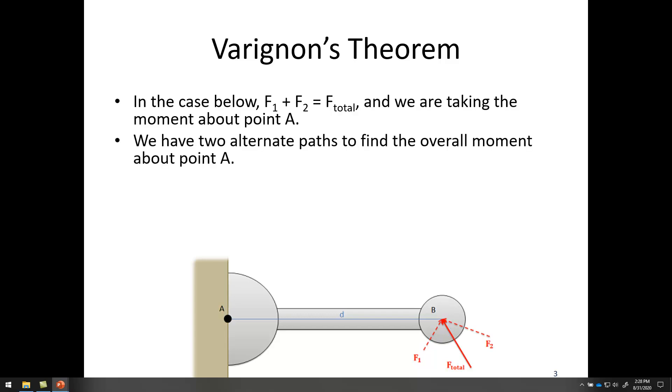So we have two alternate paths to find the overall moment about point A. Path number one, if I add F1 and F2 to find F total, then I find the moment that F total exerts about point A. That would give me the moment of the forces about point A.